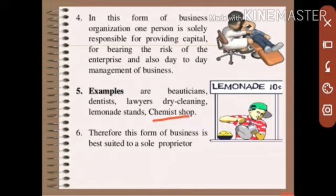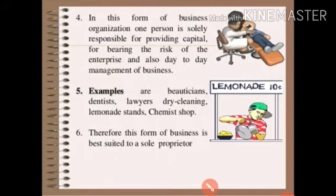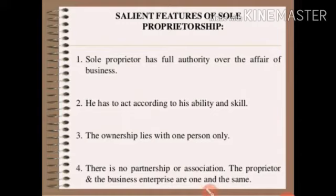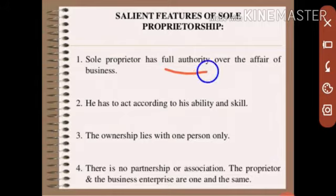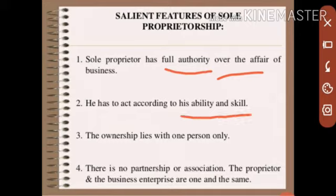Furniture carpenters and small shops are also run as sole proprietorships. This form of business is best suited to small proprietors. Now we will see the salient features of sole proprietorship. The first feature is full authority over the affairs of the business. The sole proprietor manages the firm according to his own ability and skills.